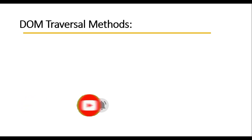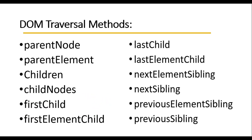DOM traversal has 12 methods which are: parentNode, parentElement, children, firstChild, lastChild, lastElementChild, nextSibling, and so on. The DOM traversal methods are used to target the object of any element.